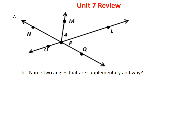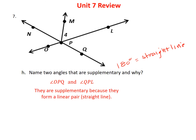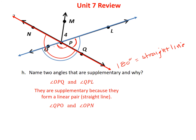Problem 7H asks us to name two supplementary angles and why. Supplementary means the angles add up to 180 degrees, which is a straight line. Find a straight line and pick two angles that make it up. For example, OPN and QPL together make up the straight angle OPQ. Any two angles that together form a straight line and add up to 180 degrees are supplementary.